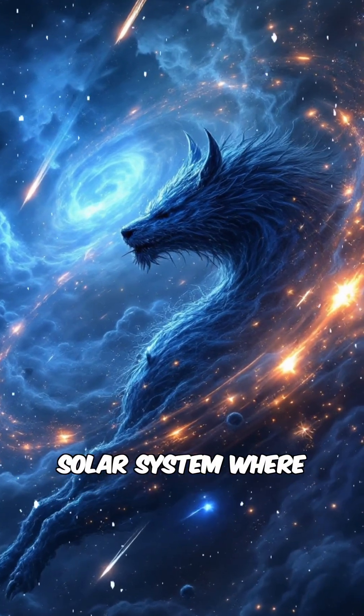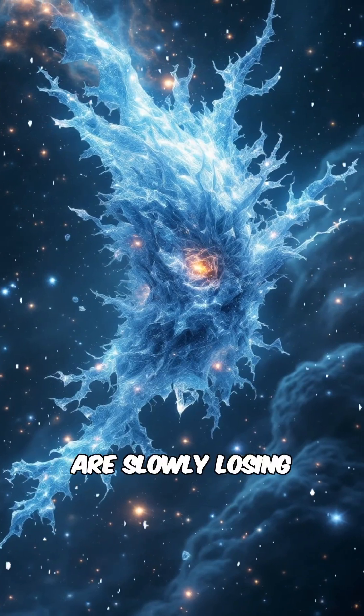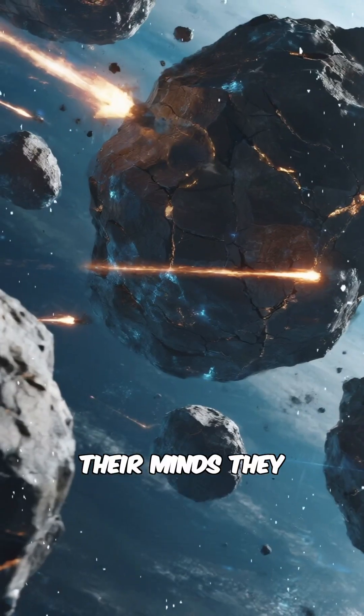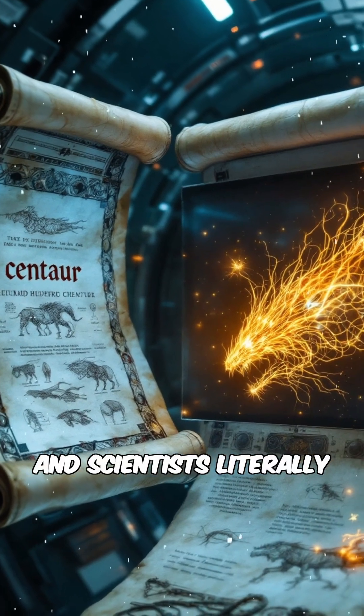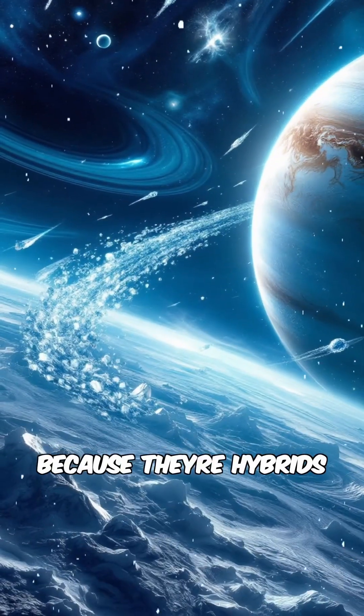There's a hidden zone in our solar system where icy space monsters are slowly losing their minds. They look like asteroids, act like comets, and scientists literally named them centaurs because they're hybrids.